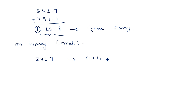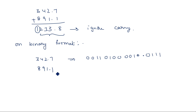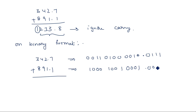Converting 3420.7 to BCD binary: 3 is 0011, 4 is 0100, 2 is 0010, 0 is 0000, dot, 7 is 0111. The tens complement number 8919.1 is also converted: 8 is 1000, 9 is 1001, 1 is 0001, 9 is 1001, dot, 1 is 0001. These two BCD binary numbers are then added together.